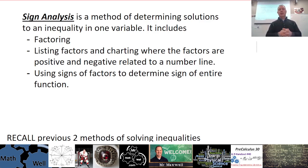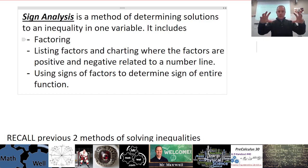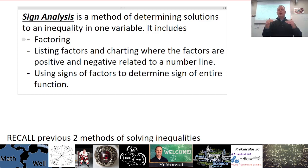This sign analysis method is the third way, and it will carry you into calculus — you need to know how to do this. It involves factoring our expression, listing the factors, and charting where the factors are positive and negative relative to the numbers on a number line. The key is seeing in a chart where the signs are for each individual factor, and then analyzing those signs through multiplication to see where the function is positive or negative.